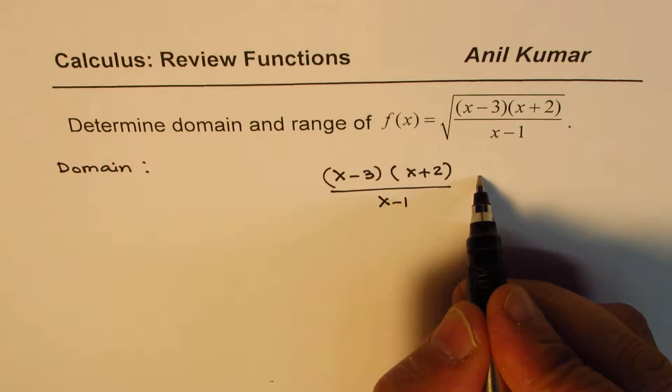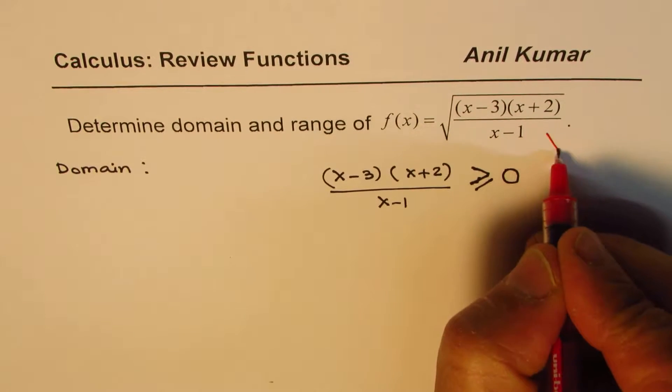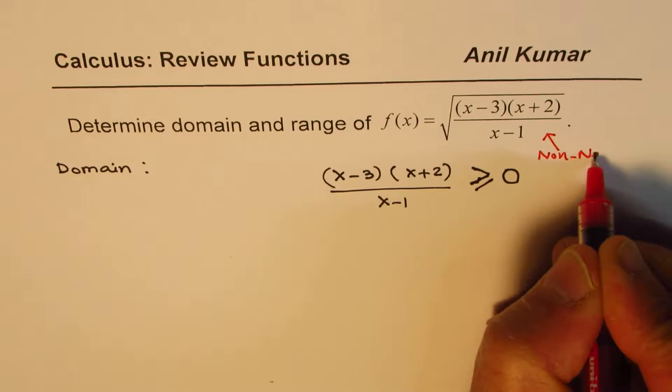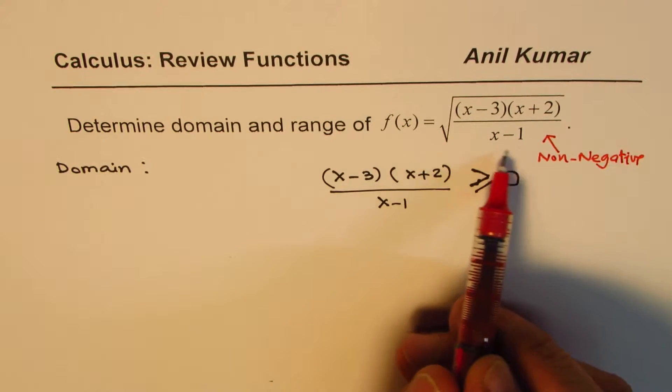However, the square root imposes other restrictions also and those are that the term x minus 3 times x plus 2 divided by x minus 1 should not be less than 0. It cannot be negative. So it has to be greater than or equal to 0. It has to be non-negative. So the restriction here is that this term inside should be non-negative. Since the square root of negative term is not real, so that is one restriction. The other restriction is that the denominator x minus 1 cannot be 0.